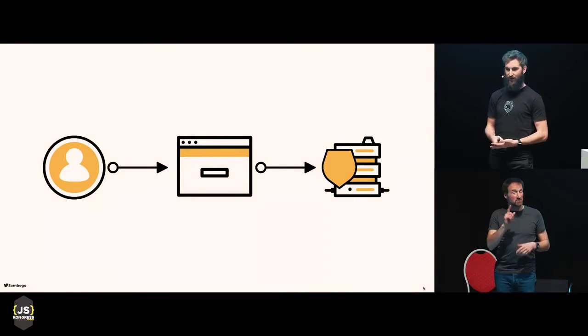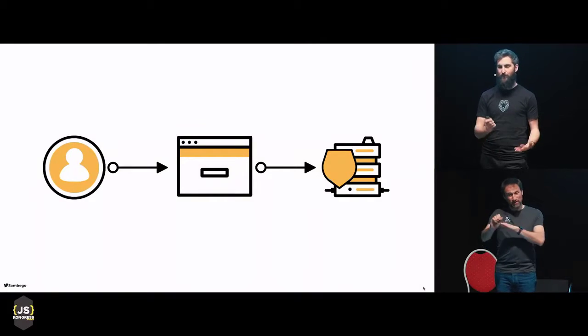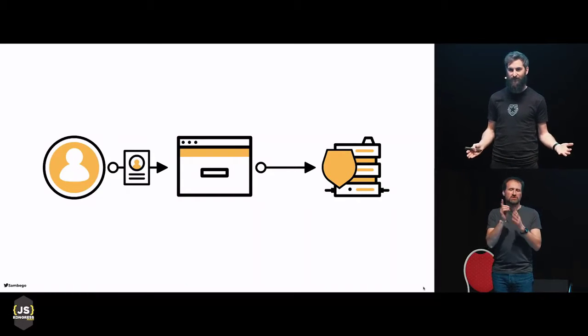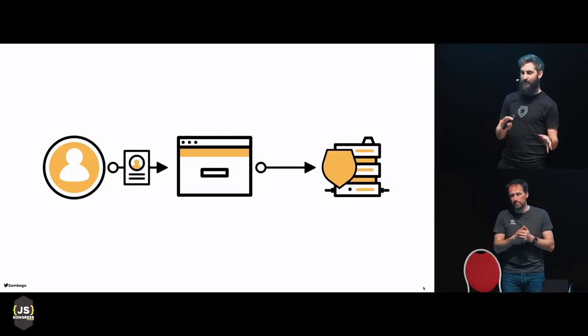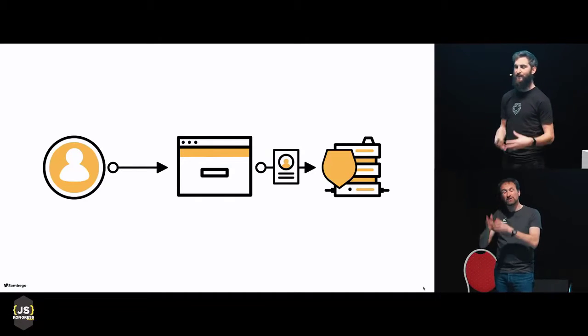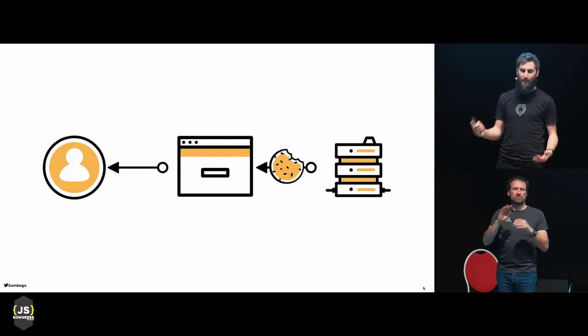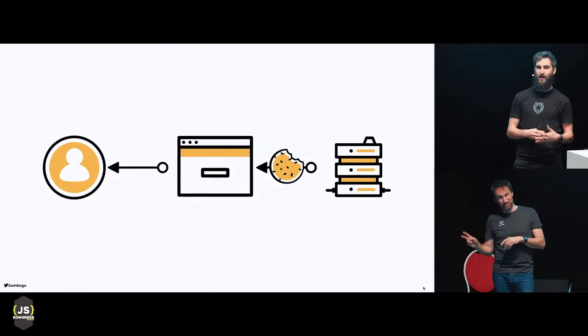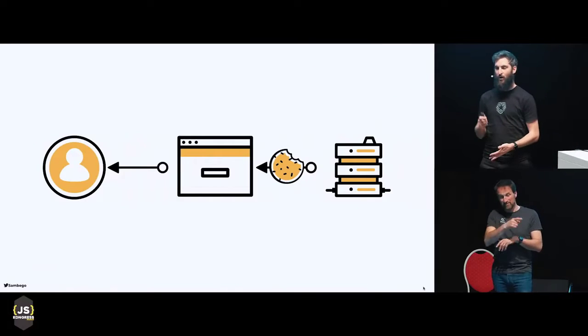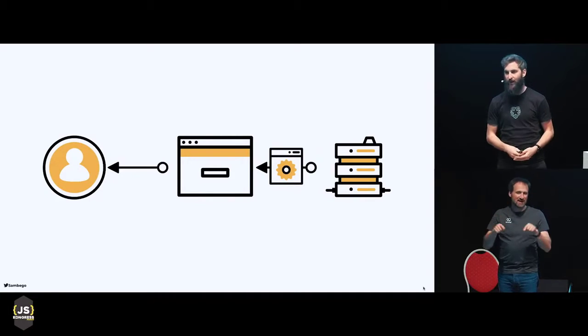But sometimes the page the user wants to see is protected — the user needs to authenticate, needs to log in with a username and password. So the server sends back a login page, and the user needs to enter their credentials. Once the server has determined that these credentials check out, it will send back the protected page. It will also send back a session cookie, which means that the user doesn't have to log in with each subsequent page request. So the next time the user asks for a protected page, we send along the session cookie, and if the session in this cookie matches, we just send along the page anyway.